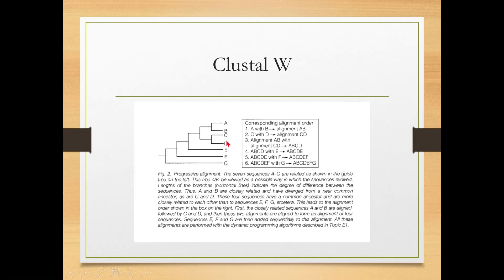In this example, seven sequences A, B, C, D, E, F, G are analyzed by pairwise alignment, the guide tree is built, and based on it: A is aligned with B, C with D, A,B with C,D, then E, F, G are aligned with A,B,C,D to produce the final alignment. All alignments are performed by dynamic programming. Clustal Omega is a very effective tool for multiple sequence alignment.